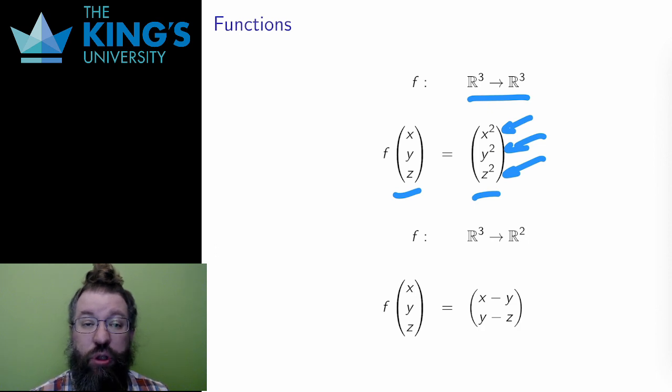The second example goes from R³ to R². The dimension does not need to be preserved by these functions. This one takes the components of a three-dimensional vector and puts them into this combination, x-y and z-y, to make a two-dimensional vector.